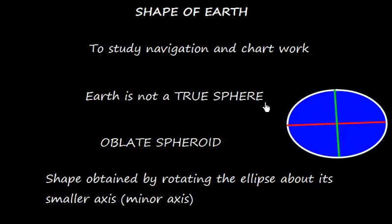Earth is not a true sphere. It is an oblate spheroid, and this spheroid is obtained by rotating the ellipse about its smaller axis or minor axis. The ellipse is a flattened circle. It has two diameters or two axes: one is the major axis, this one, and one is the minor axis, which is this one.